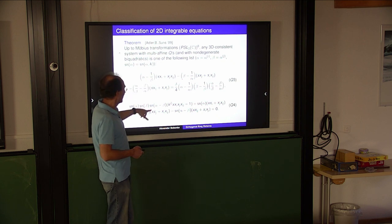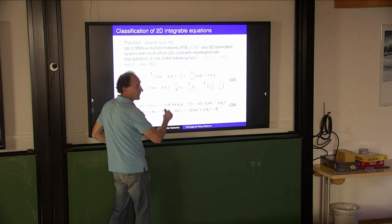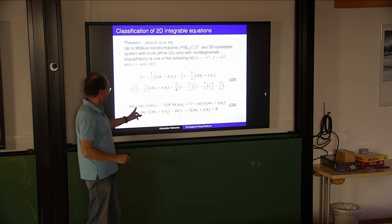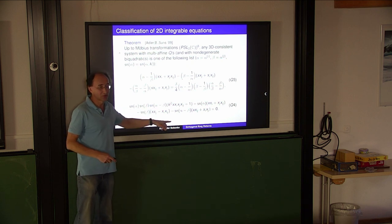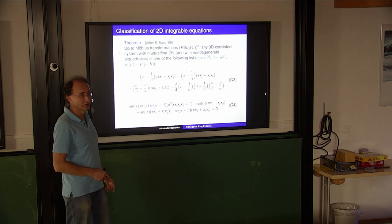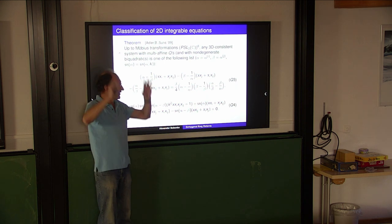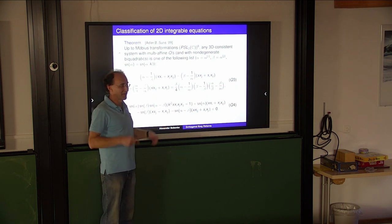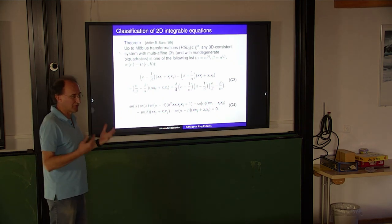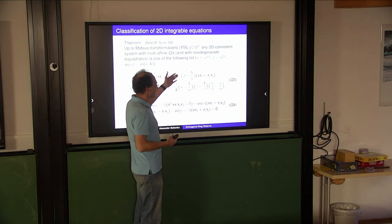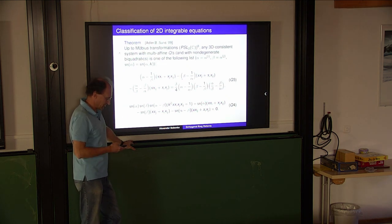Starting with this definition, some time ago we classified all equations of this type with this property. That's the ABS list: there are four equations called Q1, Q2, Q3, and Q4. All equations satisfying this consistency principle can be classified. Q4 can be treated as a master equation - it's the most general, and in principle you can reach the rest by taking appropriate limits. This is equation Q4, parameterized in terms of elliptic functions.